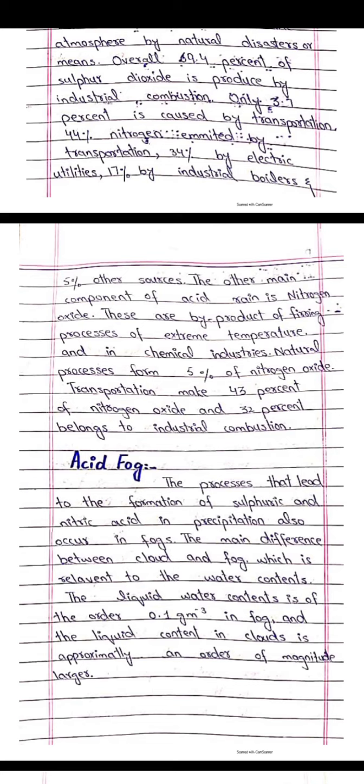The other main component of acid rain is nitrogen oxide. These are byproducts of firing processes at extreme temperatures and in chemical industries. Natural processes account for 5% of nitrogen oxide, transportation makes 43%, and 32% belongs to industrial combustion. The processes that lead to the formation of sulfuric and nitric acid in precipitation also occur in fogs. The main difference between cloud and fog relevant to water content is that the liquid water content is of the order 0.1 gram per cubic meter in fog, and in cloud it is approximately an order of magnitude larger.